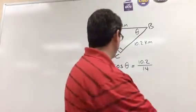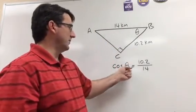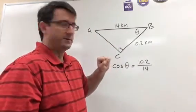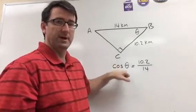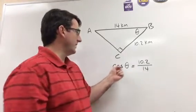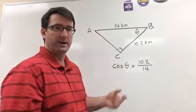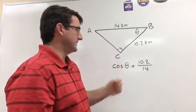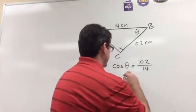Now, to get theta by itself, we need to take the inverse cosine of both sides. The inverse cosine of the cosine of theta is just theta, so we get theta on this side.